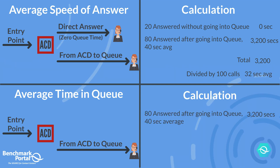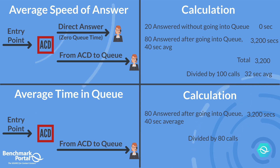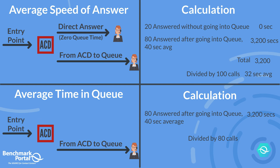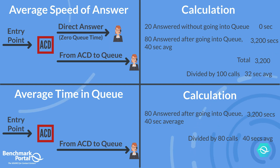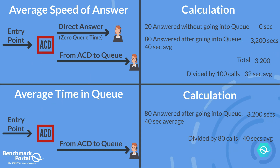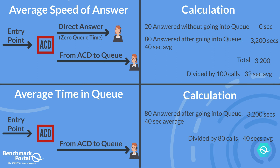The average time in queue for the same center is 3,200 seconds divided by 80 calls — the number of calls that actually entered queue — which equals 40 seconds, compared with the 32-second ASA. If every call goes into queue, then ASA and average time in queue will be the same. As noted, a few telephone systems force all calls to go into a technical queue, if only for a fraction of a second.